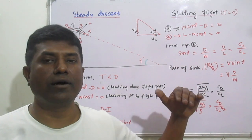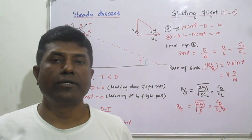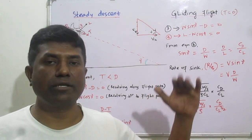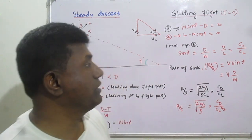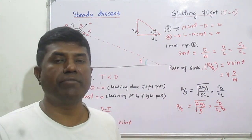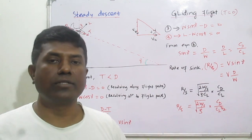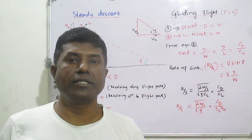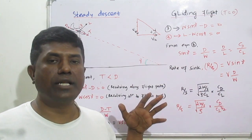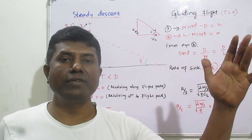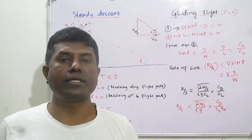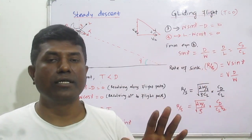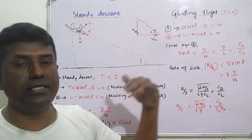First, how do we move from climbing flight to gliding flight? In climbing flight, we know the equations of motion. The same phenomenon occurring in the opposite direction is descending. Ascending is what we call climbing, and descending is what we call steady descent. Descending is just opposite to climbing — it means coming down.